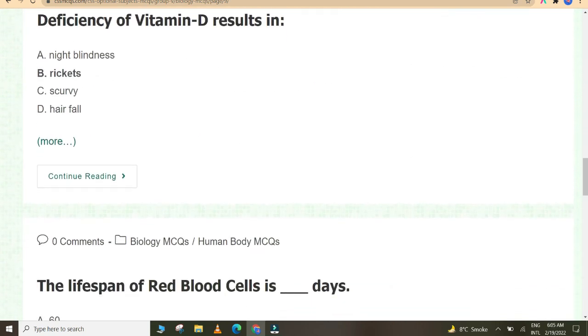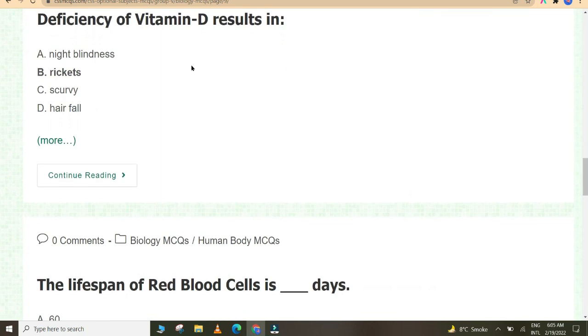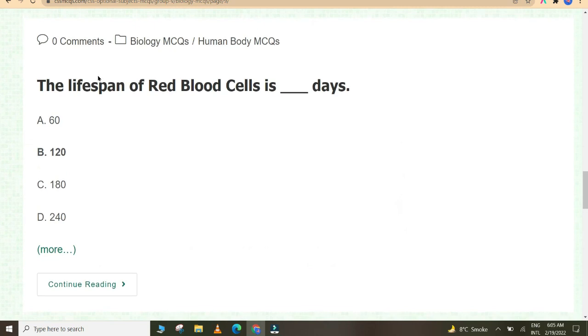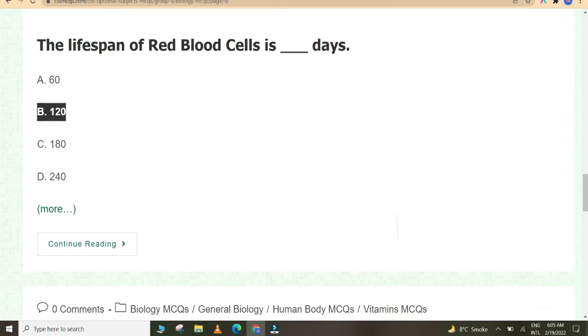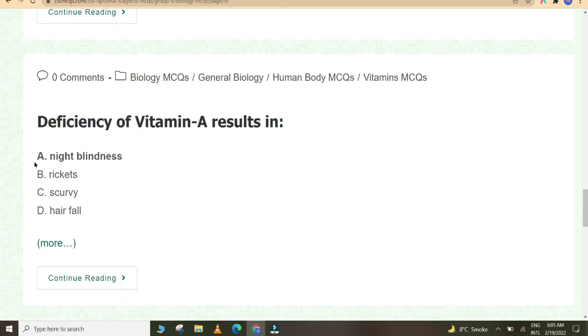A group of elephants, whales, or zebras is called herd. The average adult has a blood volume of about 5 liters. Each day, human body breathes in 15,000 to 20,000 liters of air. Deficiency of vitamin D results in rickets. The lifespan of red blood cells is 120 days. Deficiency of vitamin A results in night blindness.